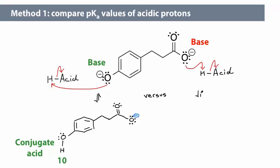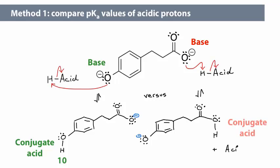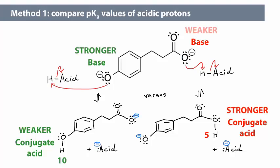First, draw the conjugate acid, then find the value in the table. It's approximately 5. Remember that the stronger the base, the weaker its conjugate acid, and vice versa. The phenol is the weaker acid of the two, meaning that phenoxide is the stronger base. If we introduced an acid into a solution with this dianion, the phenoxide would be protonated first.